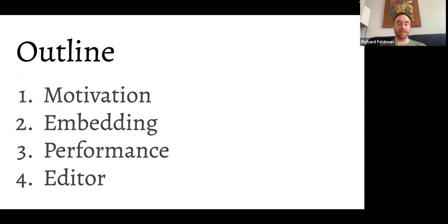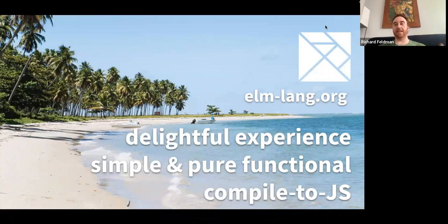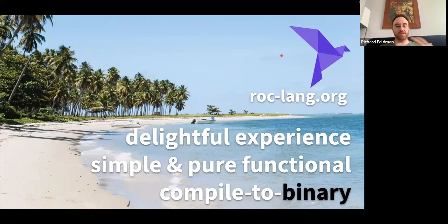Starting with motivation: I'm a big fan of the Elm programming language — it's been my favorite for a long time. Elm is a pure functional, simple language focused on a delightful user experience, and it compiles to JavaScript. I love using Elm for building UIs in the browser, but there are lots of other use cases. So I created Roc to be a similarly simple and pure functional language focused on a delightful experience, but instead of compiling to JavaScript, it compiles to binary machine code. You can use it for use cases I couldn't use Elm for.